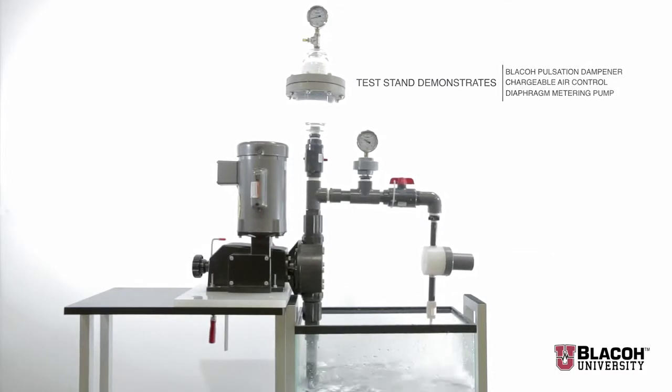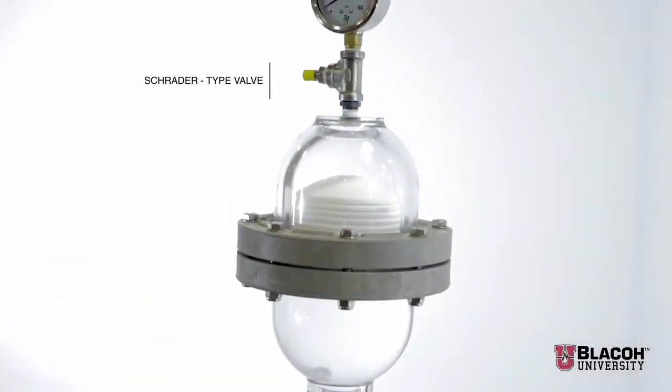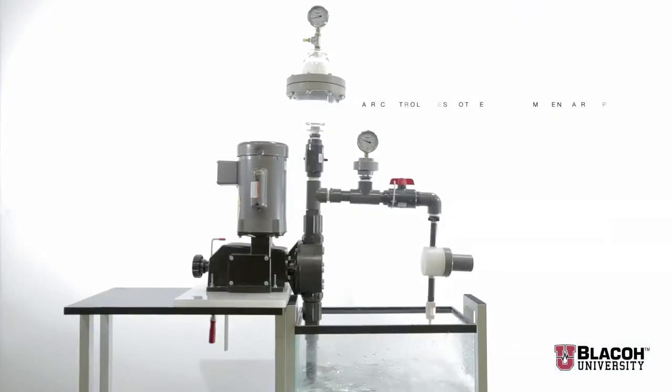The chargeable air control consists of a Schrader type charging valve and a pressure gauge. The chargeable air control does not require any permanent air supply, just an initial charge.